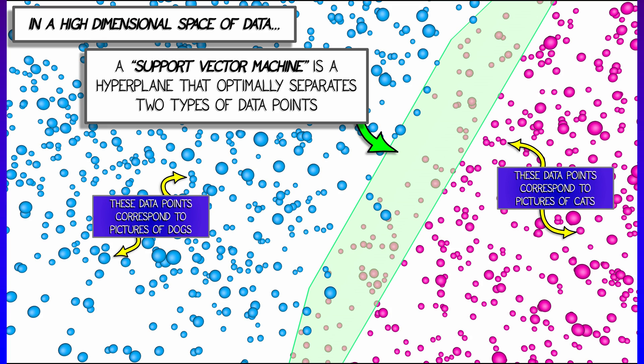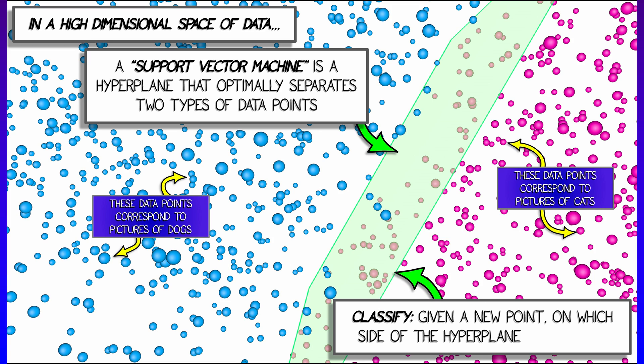A separating hyperplane is going to be something like the analog of a plane that cuts through the space and separates all the dog pictures from all the cat pictures.